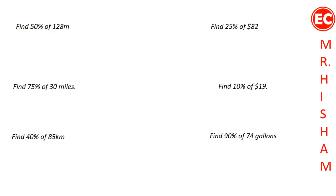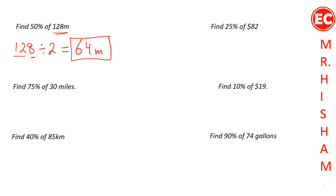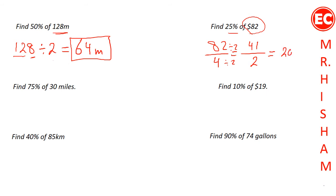To find 50% of 128 meters, divide 128 by 2: 12 divided by 2 is 6 and 8 divided by 2 is 4, giving 64 meters. To find 25% of 82, divide 82 by 4. Simplifying, divide both numerator and denominator by 2 to get 41 over 2, and 41 divided by 2 equals 20.5.